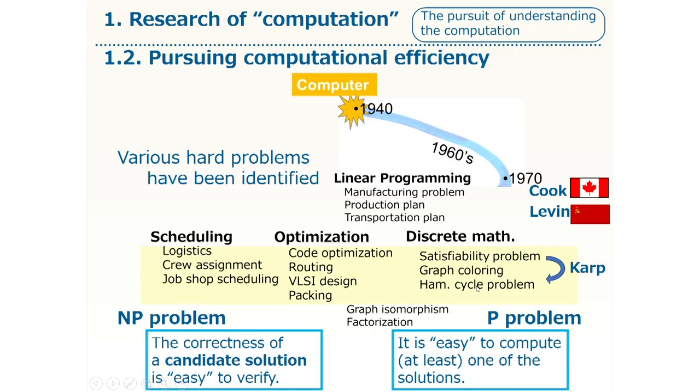Then, it was shown that quite a good number of problems that people had struggled with, in fact, had the same hardness. In a nutshell, it was shown that they all are easy, that is P problems, or they all are computationally hard, or there is essentially no better way than checking all candidate solutions to solve these problems.